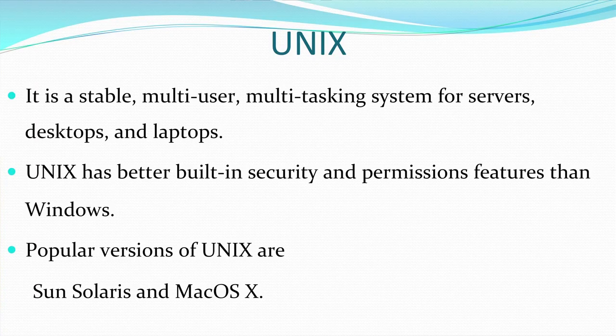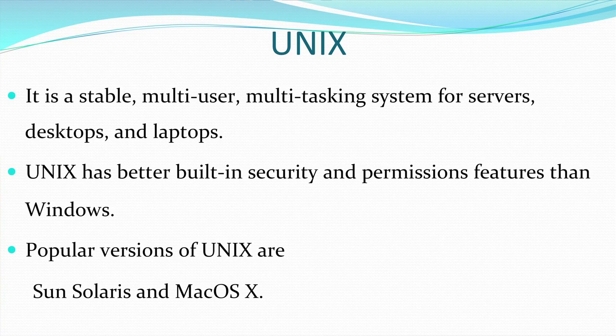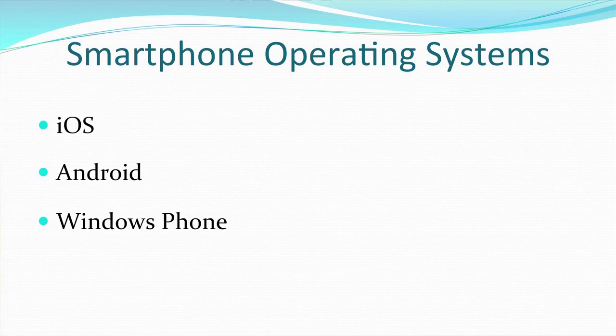Unix is a text user interface operating system that is very strong and is used to perform multiple tasks and processes at the same time. It is a multi-user operating system that can be used for servers, desktops, and laptops. Linux is actually the advanced version of Unix. Unix has built-in security and permission features that are even better than Windows. Popular versions of Unix include Sun Solaris and Mac OS X.